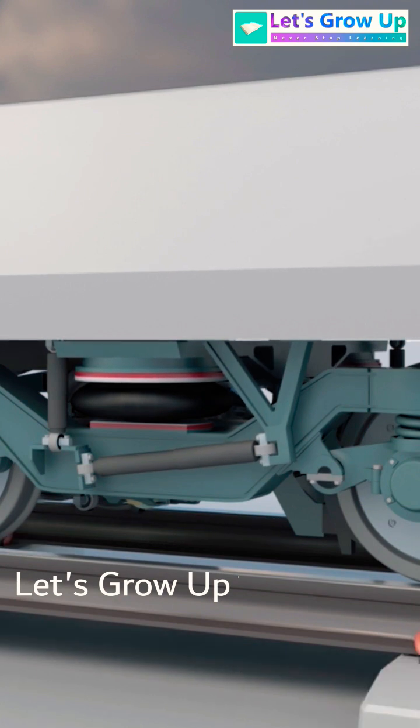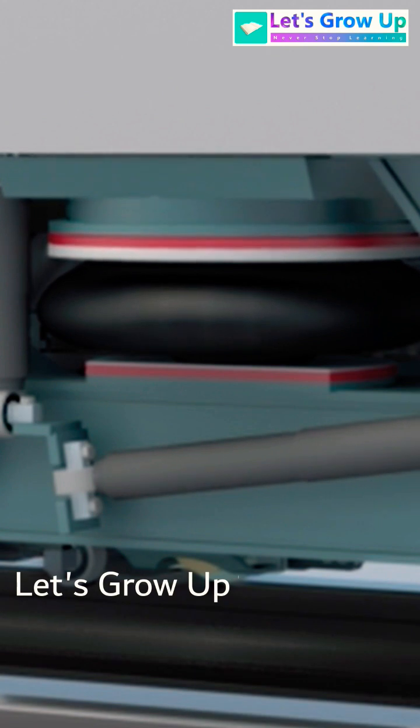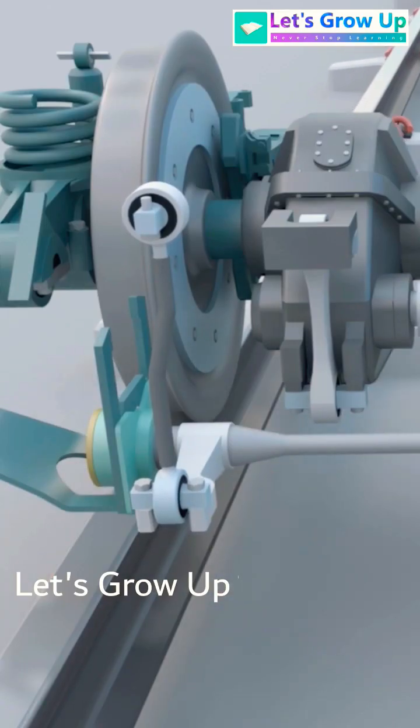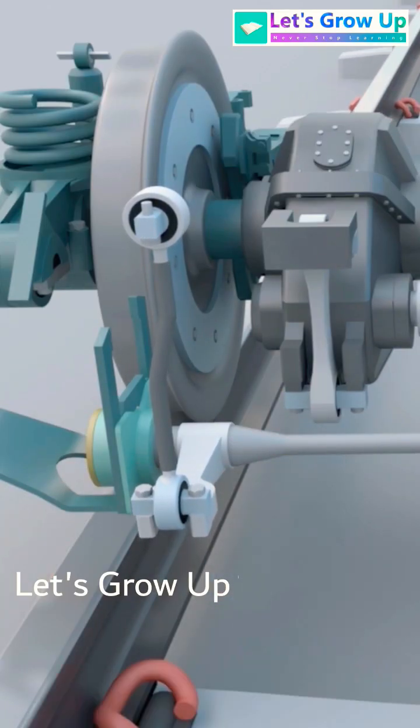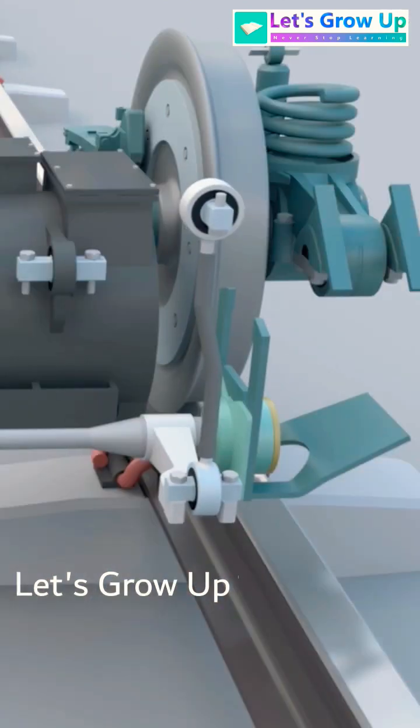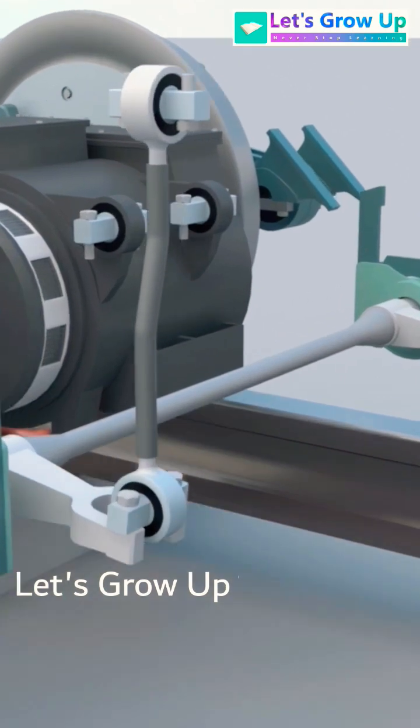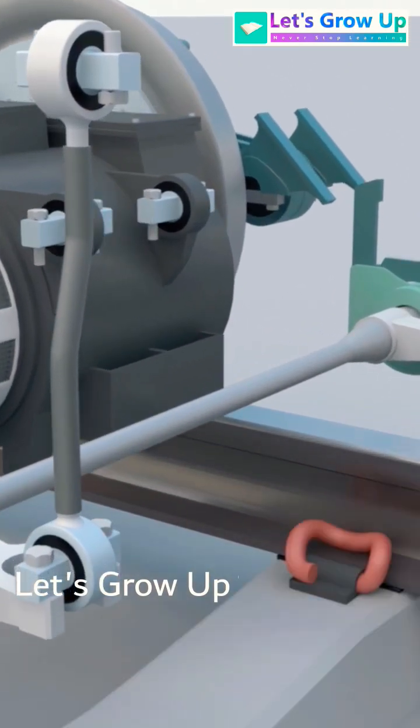This high-speed train utilizes an air spring suspension system that works vertically. However, a separate system is required to ensure both sides of the suspension have equal motion. Without this anti-roll bar, there would be no way to control the secondary suspension's lateral motion. And that's how the anti-roll bar provides a smooth and stable ride.